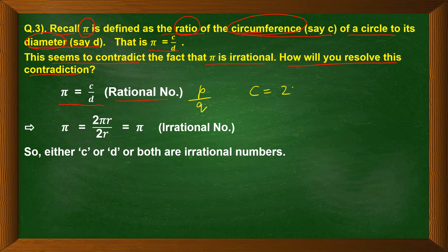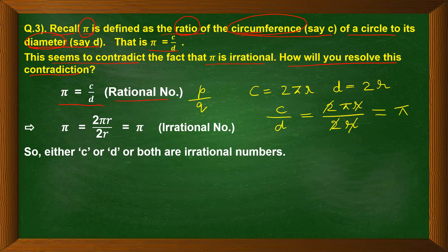To resolve the contradiction: suppose circumference is 2πr and diameter is 2r. Dividing circumference by diameter gives 2πr divided by 2r — the 2s and rs cancel, leaving π. When you actually compute π, you get a non-terminating, non-repeating decimal expansion, which means it is an irrational number.